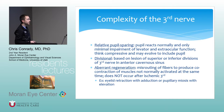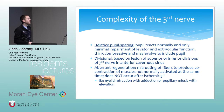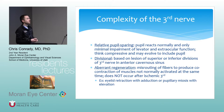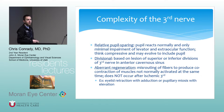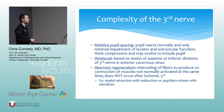Something that can skew things after third nerve palsies — not usually in the setting of ischemic thirds — is aberrant regeneration. This is misrouting of fibers producing co-contraction of muscles not normally activated at the same time. For example, eyelid retraction with adduction, or pupillary miosis with elevation.